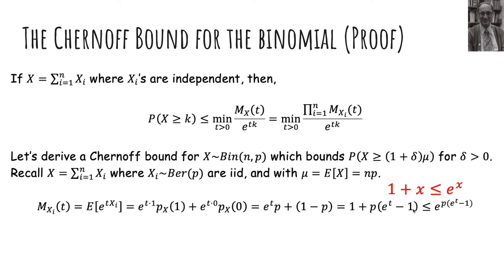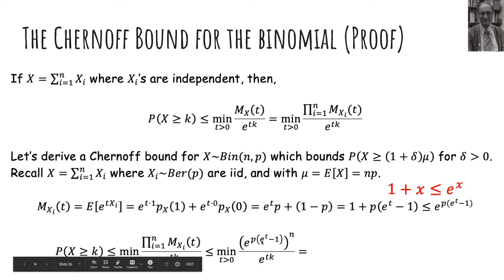So I'm taking this to be x and I'm replacing 1 plus x with e to the x. Then I take my thing and I plug in the Bernoulli one that I had here. And since I'm taking the product of n of them and they're all the same, right, they're iid, then I can raise it to the nth power. And you can do some more algebra.